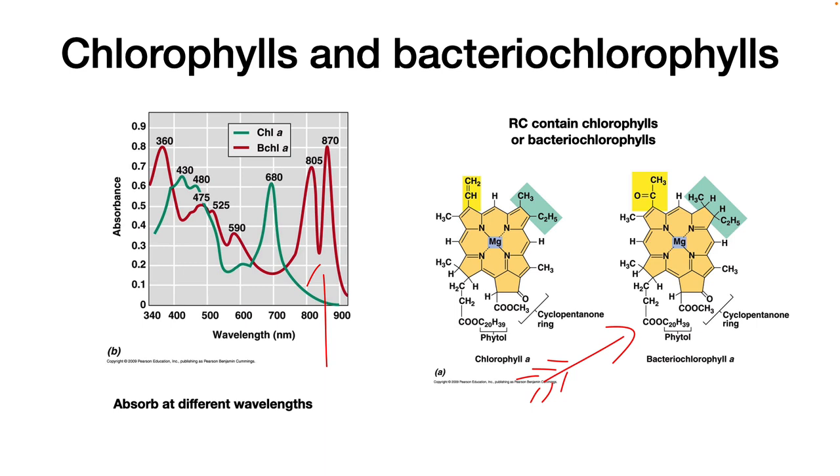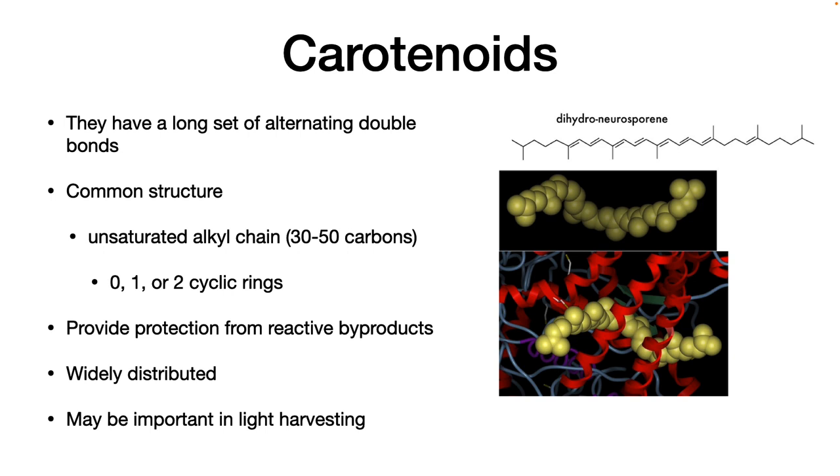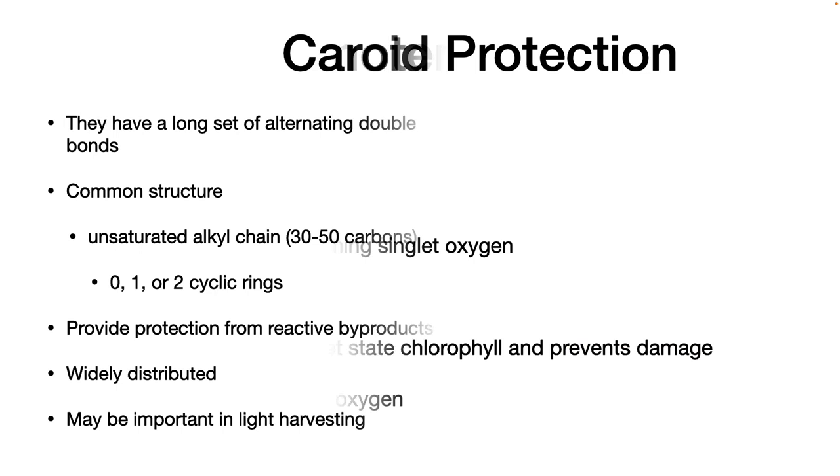Bacteriochlorophyll A, found in purple bacteria, has the red absorption profile. These microbes compete for light, and you can see that it is an advantage for the purple bacteria, which are lower in the water column, to absorb a different wavelength, greater than 680 nanometers, to capture that energy, since the green chlorophyll A line is not absorbing that light energy. Light-harvesting complexes also have carotenoids in their proteins. All carotenoids contain a long, unsaturated alkyl chain of 30 to 50 carbons with alternating double bonds. At the end will be 0, 1, or 2 cyclic rings.